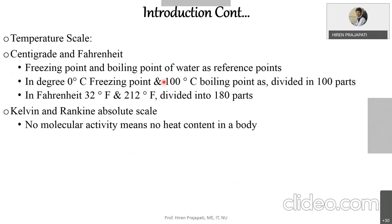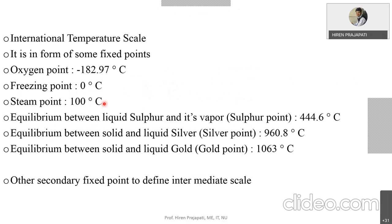While we have considered two popular reference points, for other reference points we use different equilibrium phases between liquid and vapor of different materials. For example, liquid sulfur and its vapor temperature is 444.6 degrees Celsius. Silver converting from solid to liquid occurs at 960 degrees Celsius. Gold temperature is also used as a reference. These are other reference points used for preparing the scale of instruments for temperature measurement.